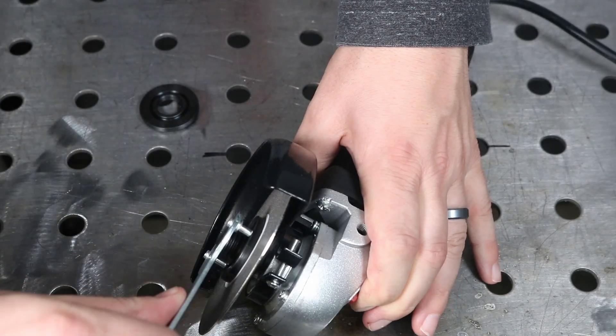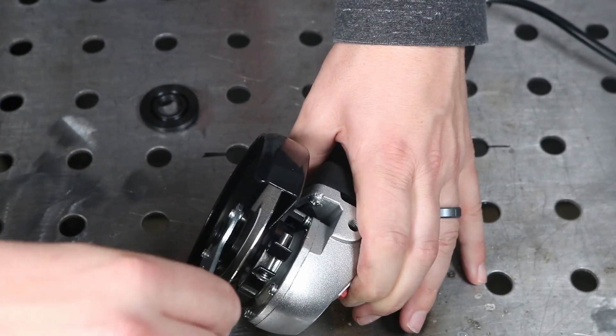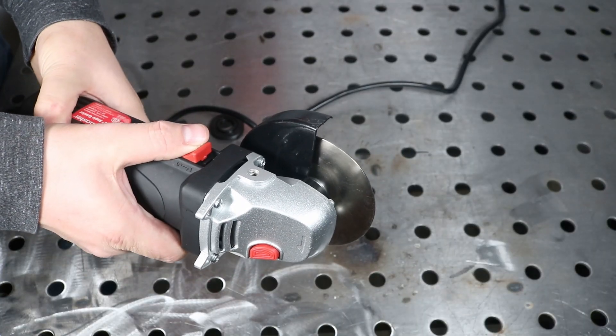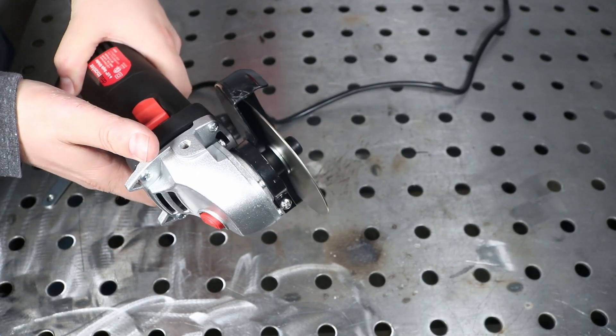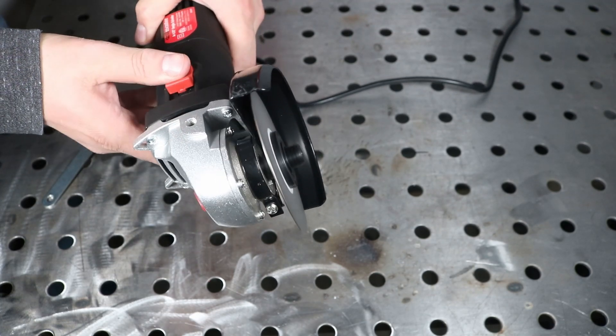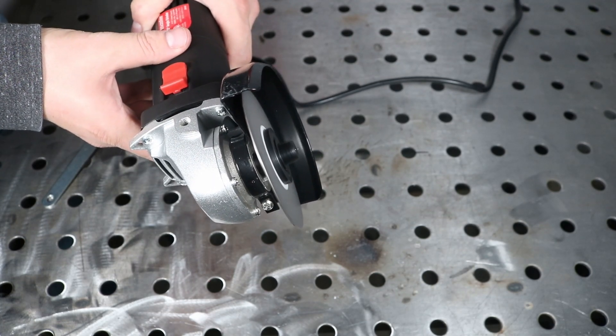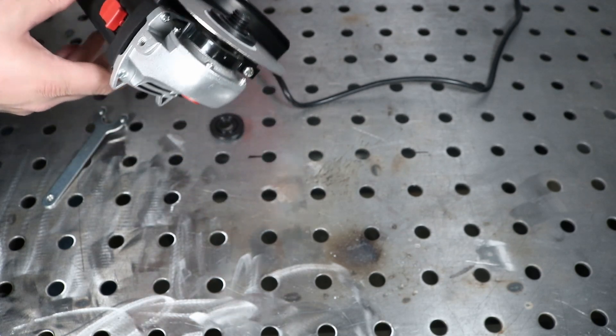And I'll just cinch that up with the spanner wrench here. And then let's turn it on and make sure everything looks like it's running true and running well. And it does. So I think we have a good diamond wheel on a motor that'll work pretty well for a tungsten grinder.